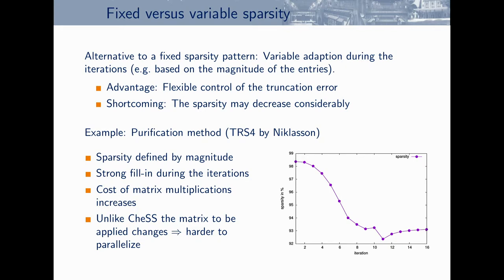We work with a fixed sparsity pattern. An alternative is a dynamic approach where you set to zero all elements below a given threshold during the calculation. This is flexible and lets you control the error, but the sparsity of your matrix can decrease a lot and the calculation cost can explode. We tested this with the purification method: starting with a sparsity of more than 98%, there is very strong fill-in, and by iteration 10–11 it drops to only 93%. That's why we prefer a predefined sparsity pattern — you already know the cost at the beginning.